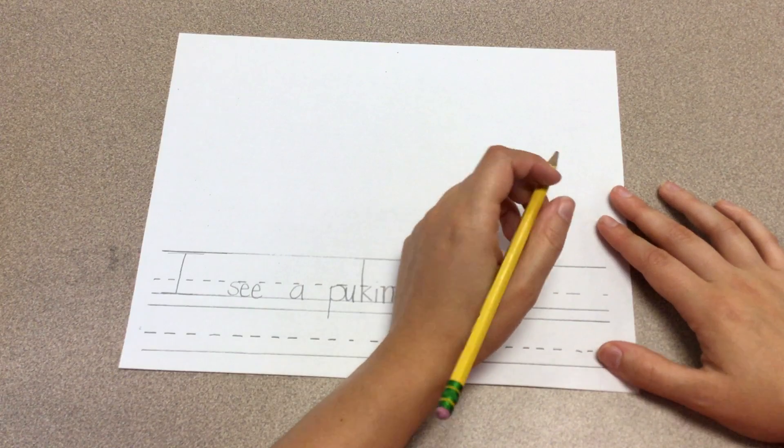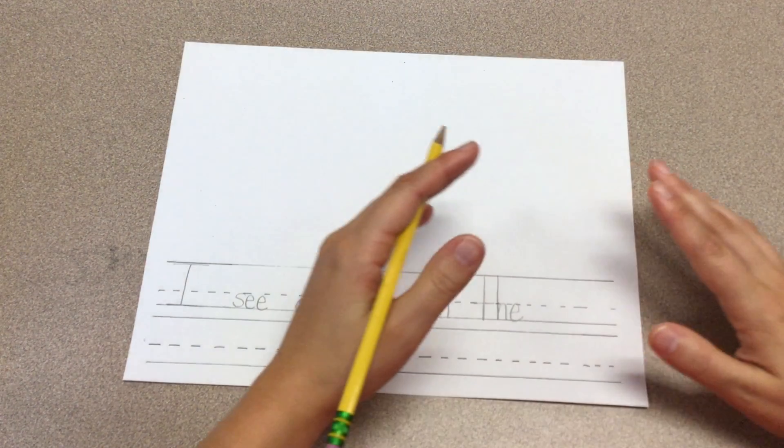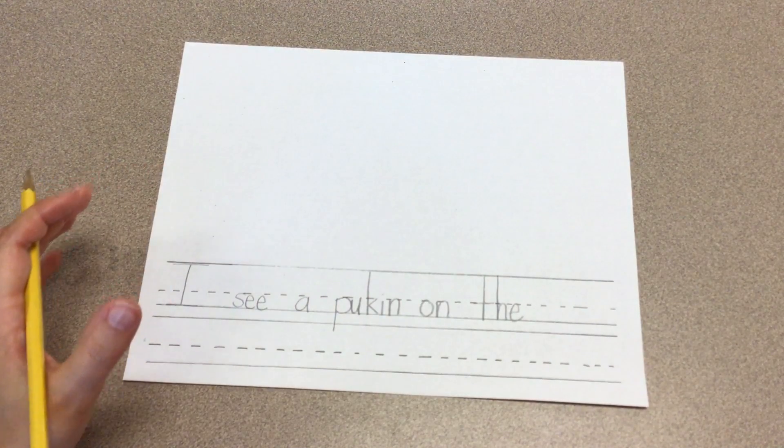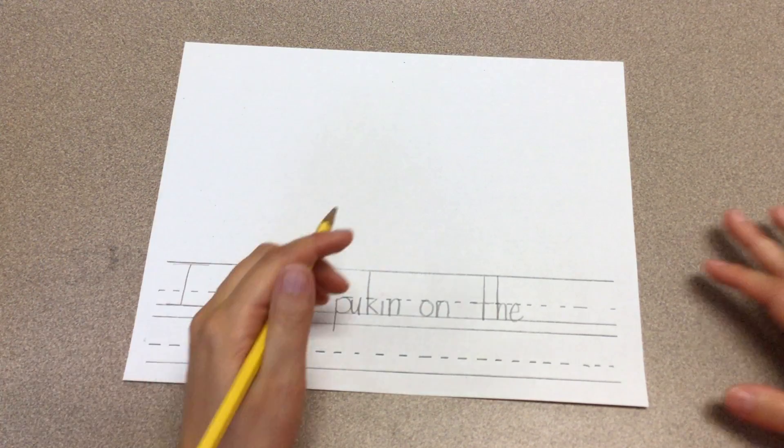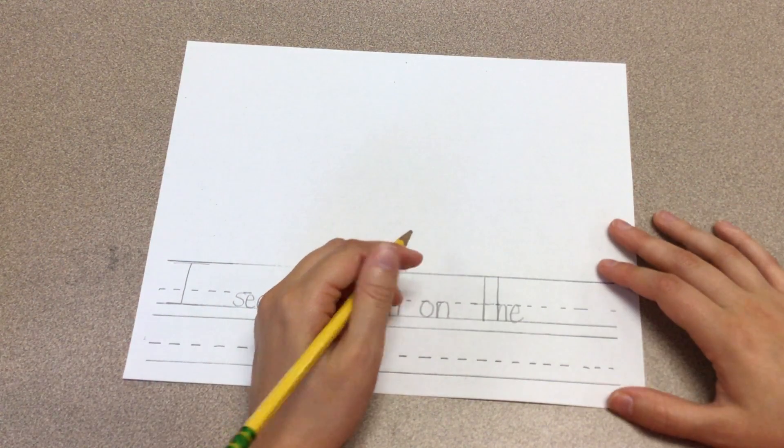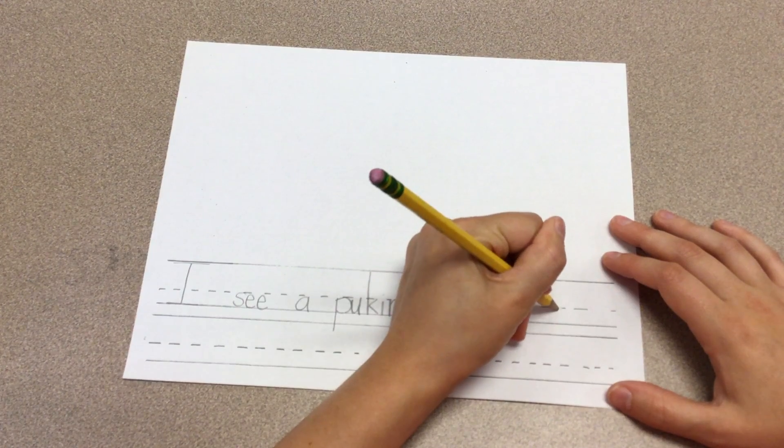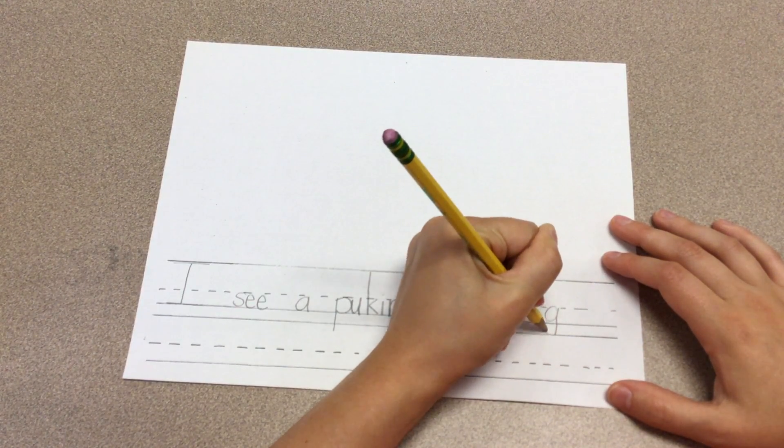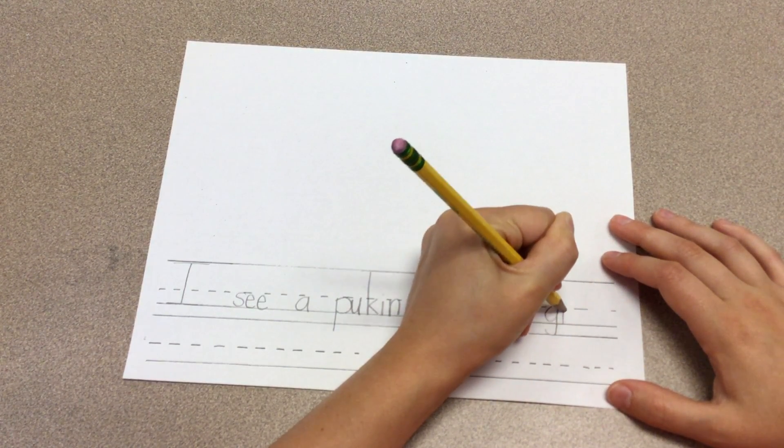G, let's stretch the word ground out. G, ground. Okay, what do I hear at the beginning? G, g, g, golden girl, right? Gr. Red robot. Gr.